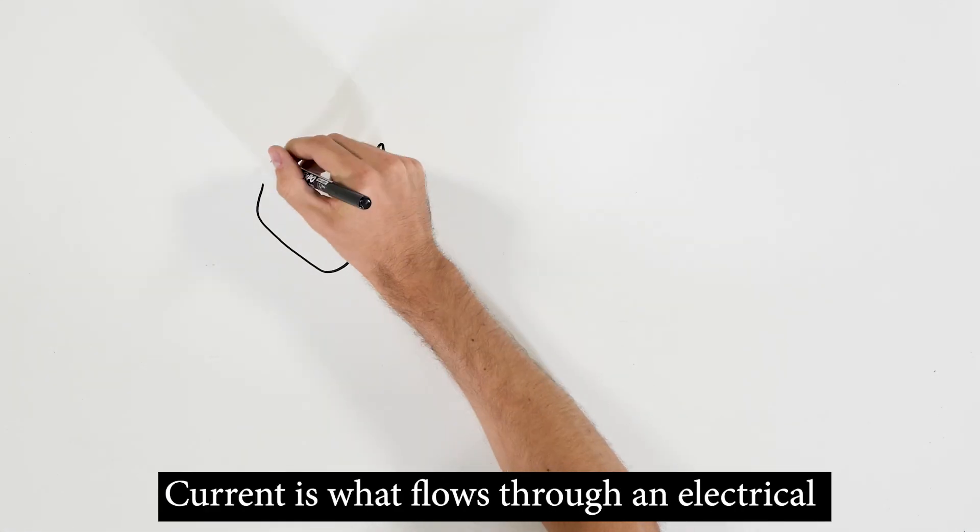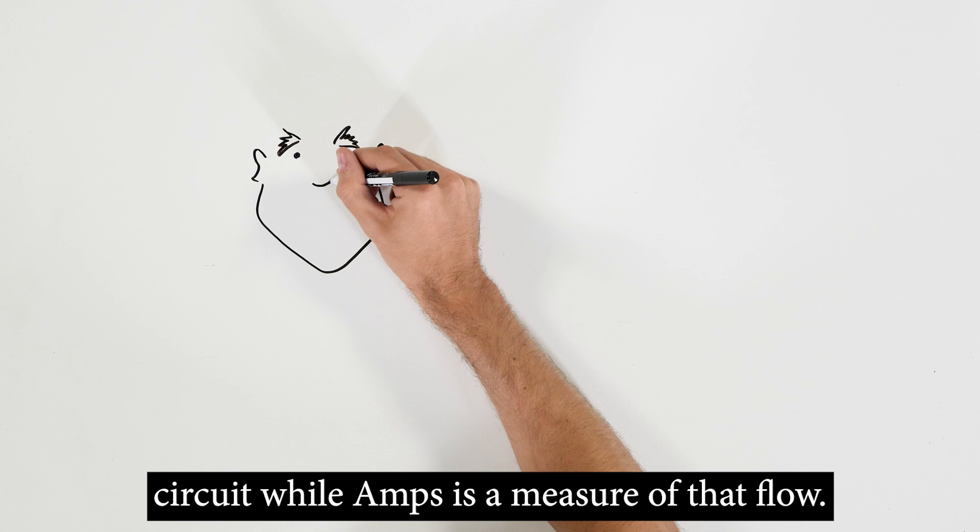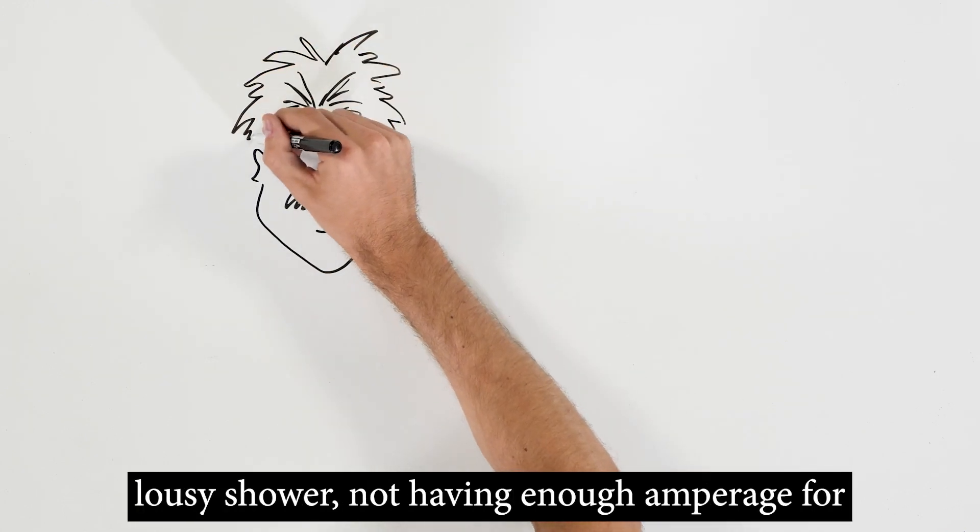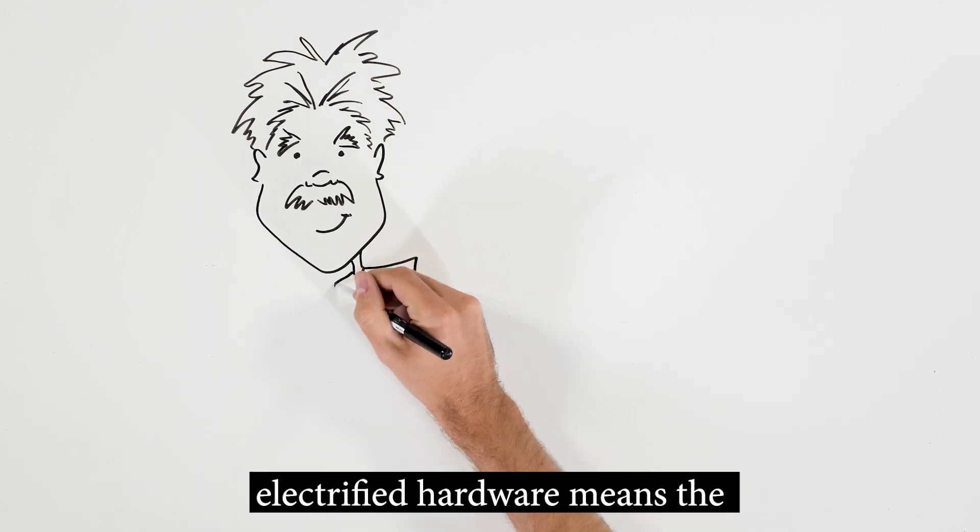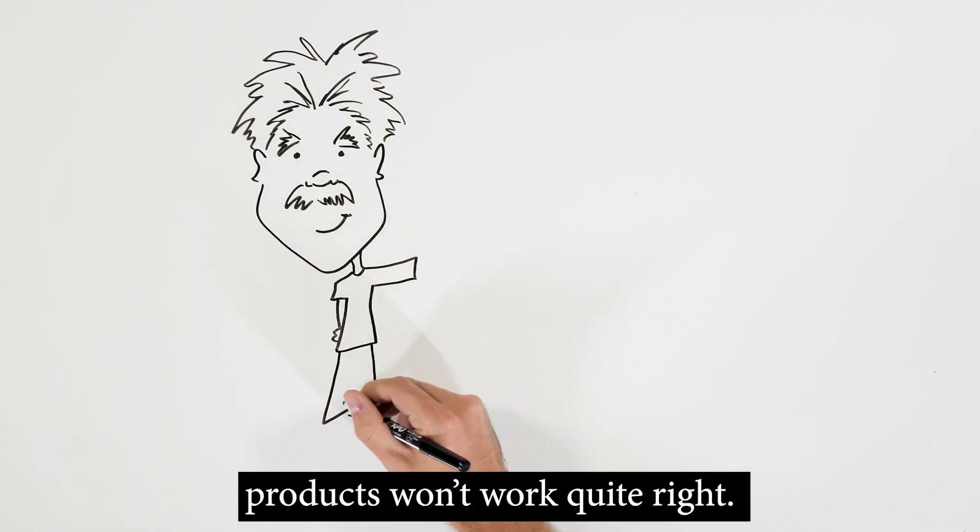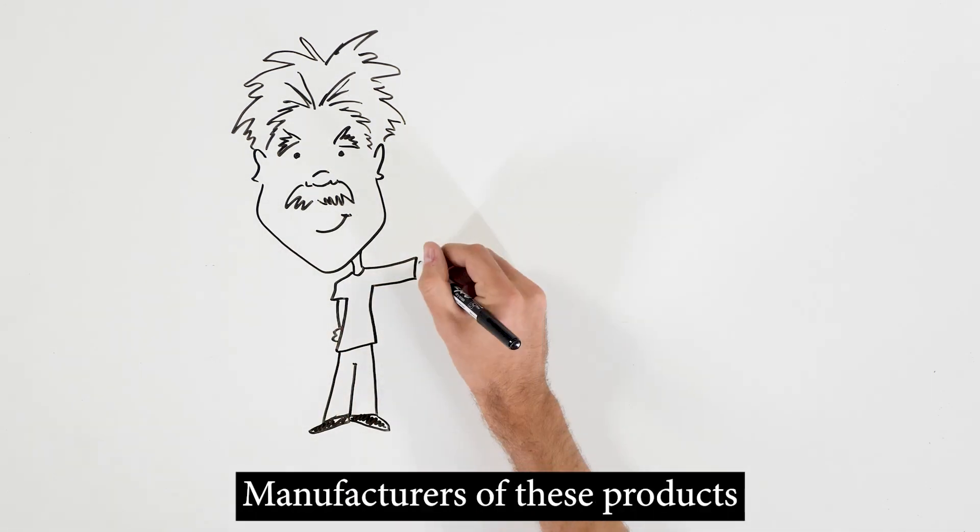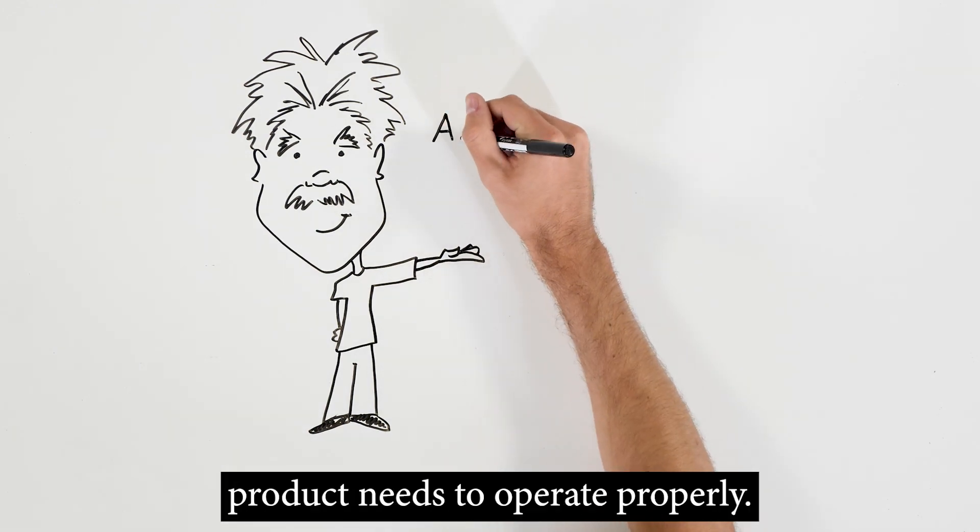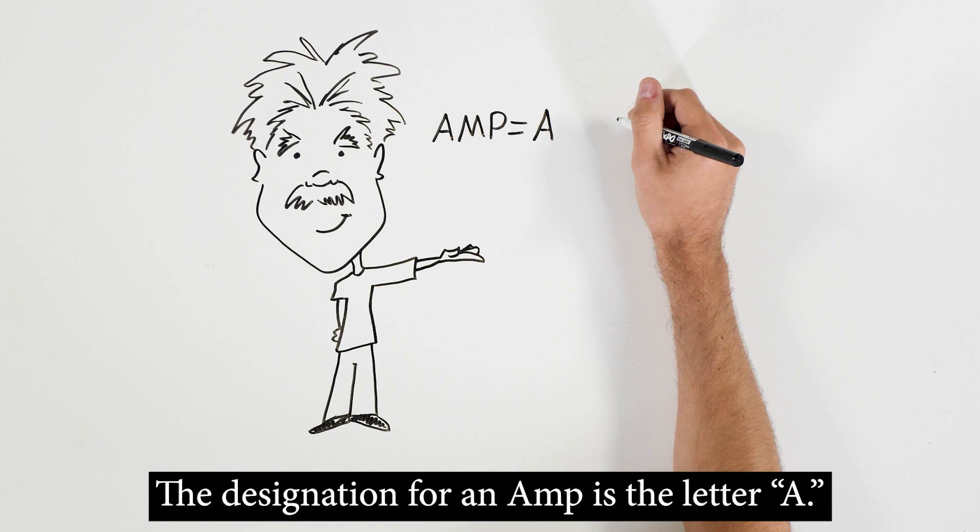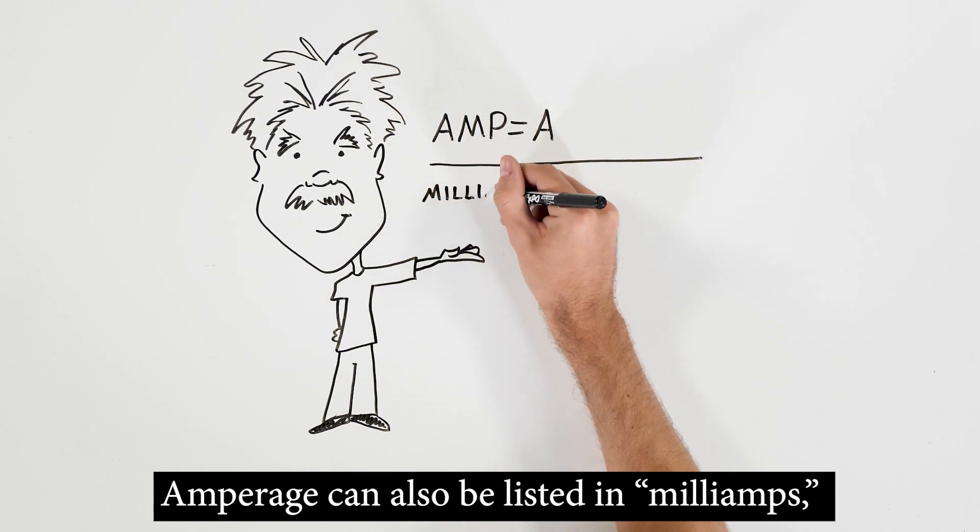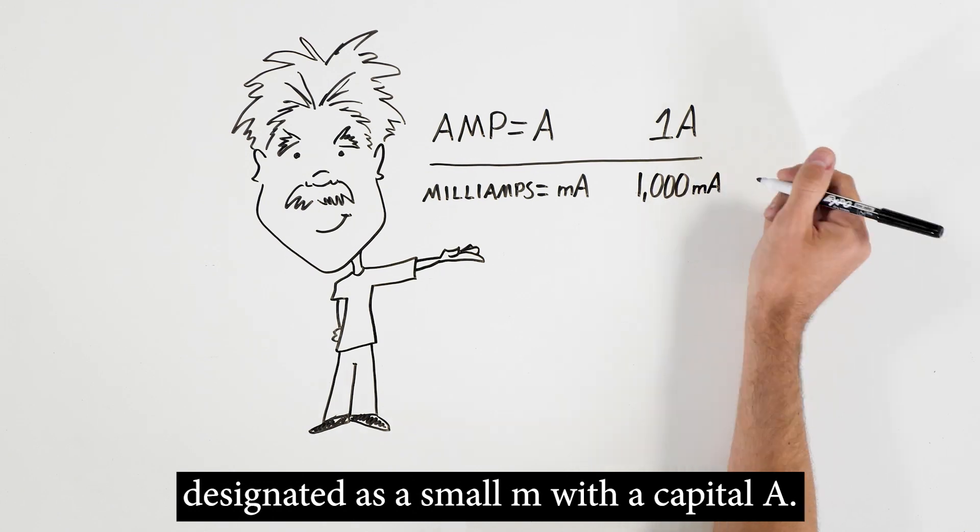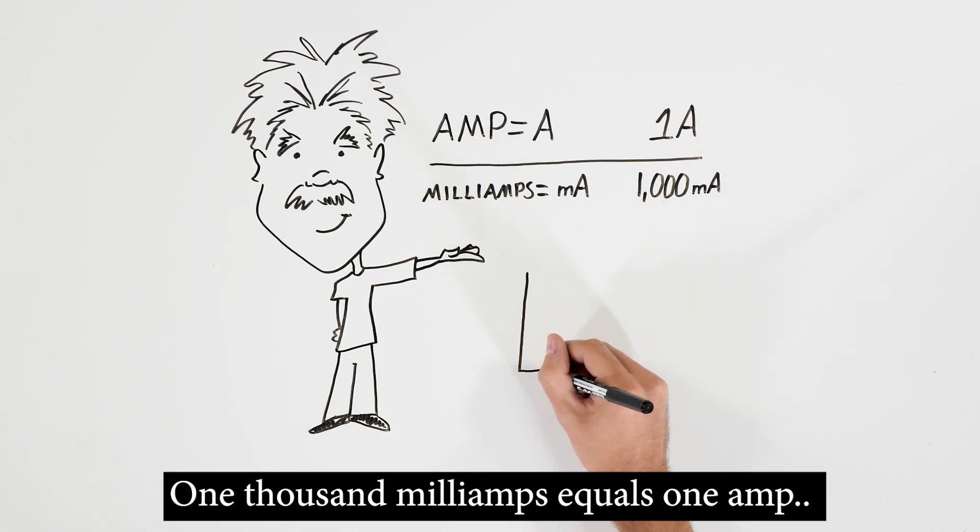Current is what flows through an electrical circuit while amps is a measure of that flow. Just like not enough water flow makes for a lousy shower, not having enough amperage for electrified hardware means the products won't work quite right. Manufacturers of these products will tell you how many amps a product needs to operate properly. The designation for an amp is the letter A. Amperage can also be listed in milliamps, designated as a small m with a capital A. 1,000 milliamps equals 1 amp.